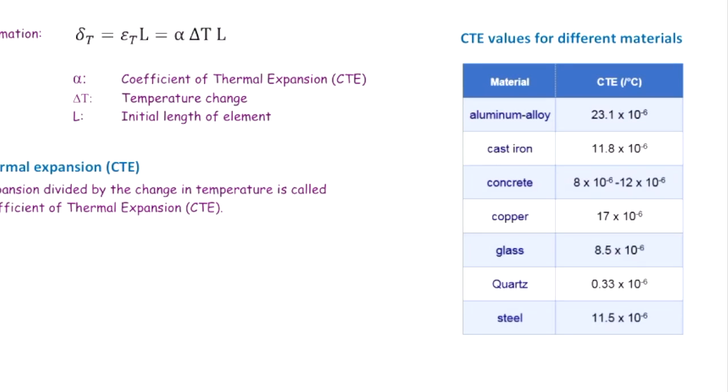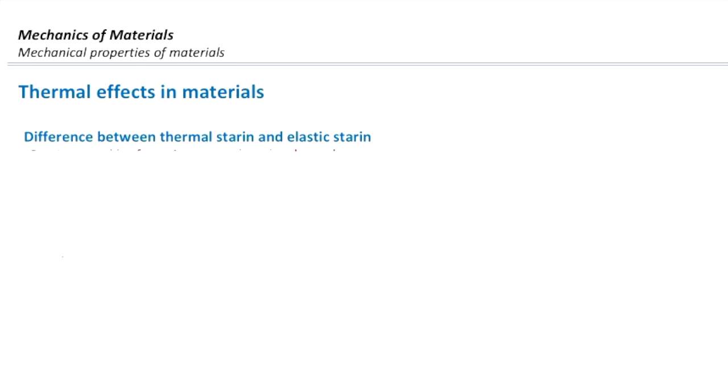Typical values are given in this table. The highest belongs to aluminum, which expands more than steel when subjected to temperature change. On the other hand, quartz has very low thermal expansion and doesn't change much when subjected to temperature.